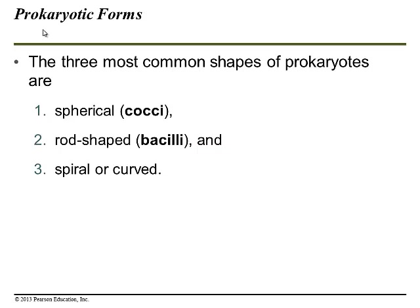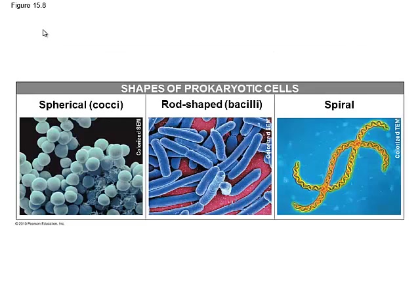Back to the prokaryotes. The three most common shapes are little spherical balls called cocci, or they might be pill-shaped rods called bacilli, or they might be curved and spiral — sometimes we refer to those as spirochetes. On page 300 in your textbook, we see some of these up close and personal. This is a very large magnification. Have you guys looked at any bacteria in lab? Yes — very, very small. What magnification did you have to use? Oil immersion.